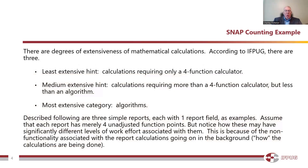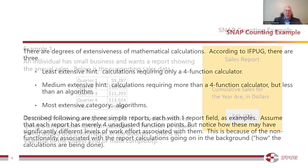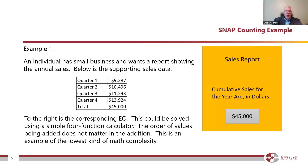According to IFPUG, there are three degrees of mathematical calculations — three degrees of extensiveness. The hint for the least extensive is a calculation that requires only a four-function calculator. A medium extensive hint is a calculation that requires more than a four-function calculator but less than an algorithm. And the most extensive are algorithms. Here are going to be three simple reports, each with one field, as an example.